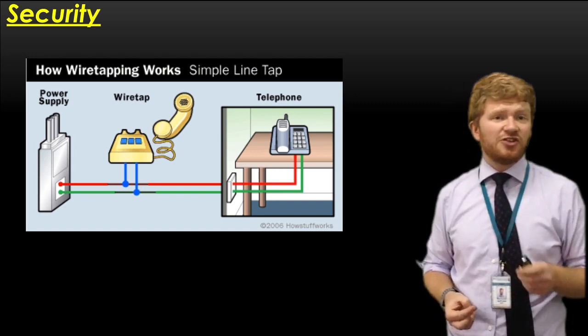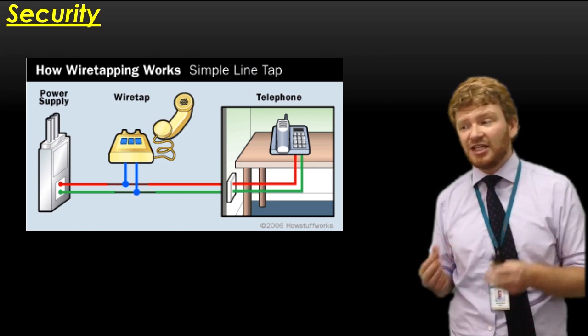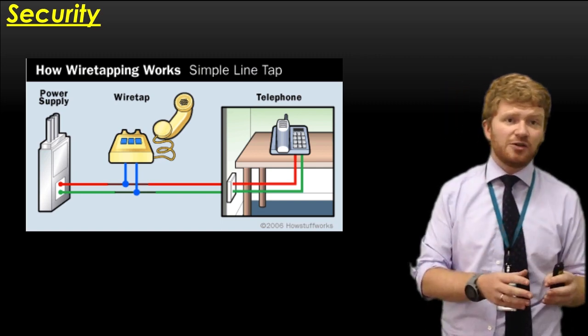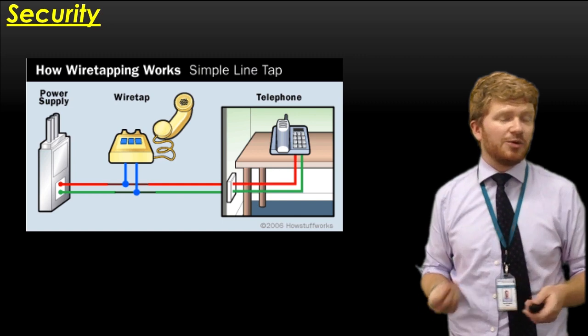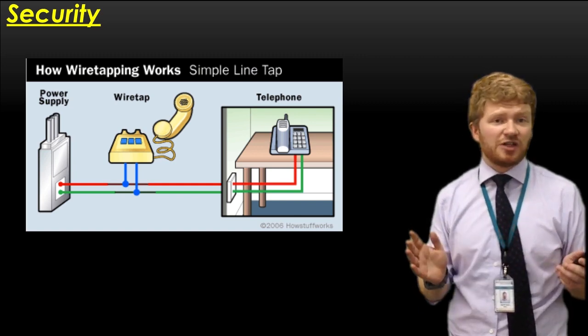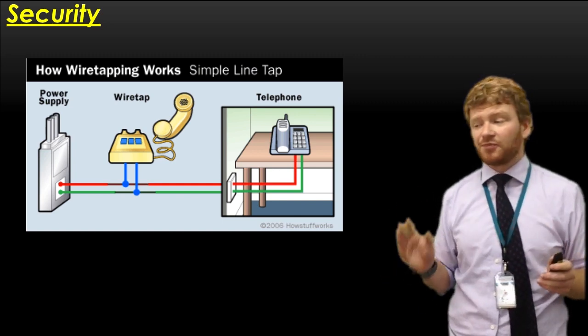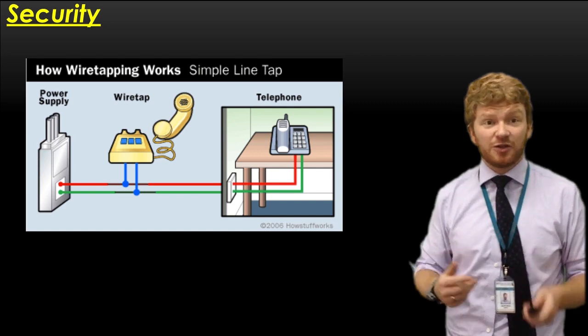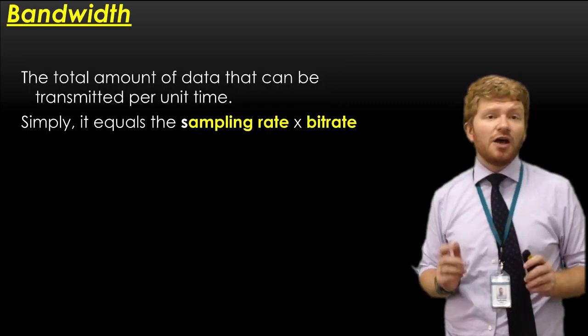Now, that's not such an issue anymore because we have encryption, and encryption means that even if you can completely recover the signal, you can't tell what it says. However, encryption doesn't come up in the CIE course, so you still need to think a little bit about the physical security of the media.